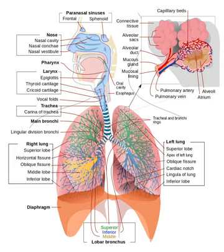Although countercurrent exchange systems theoretically allow an almost complete transfer of a respiratory gas from one side of the exchanger to the other, in fish less than 80% of the oxygen in the water flowing over the gills is generally transferred to the blood. In certain active pelagic sharks, water passes through the mouth and over the gills while they are moving, in a process known as RAM ventilation. While at rest, most sharks pump water over their gills, as most bony fish do, to ensure that oxygenated water continues to flow over their gills. But a small number of species have lost the ability to pump water through their gills and must swim without rest. These species are obligate ram ventilators and would presumably asphyxiate if unable to move.